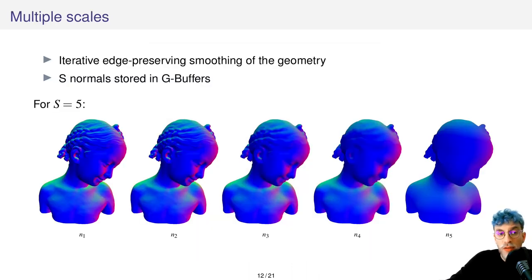Now that we have seen how to enhance a single scale, we would like to enhance multiple scale fields at the same time and we achieve that by creating a scale space first. We iteratively smooth the geometry of the model using an edge-preserving filtering operation that gives us a set of S normals.